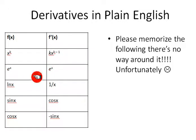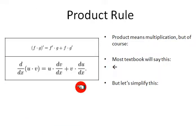e to the x, the derivative is e to the x. The natural log of x becomes 1 over x. Sine x becomes cosine x, and cosine x becomes minus sine x. You just have to memorize this, there's no way around it unfortunately. Please at least memorize this. This is easy to remember, these two I get confused even myself.